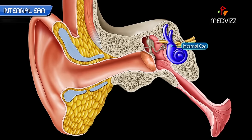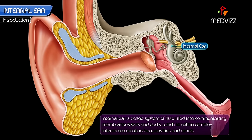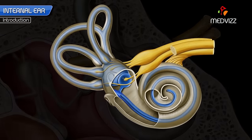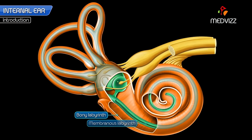The internal ear is situated in the petrous part of the temporal bone, deep to the tympanic cavity. It is a closed system of fluid-filled intercommunicating membranous sacs and ducts which lie within complex intercommunicating bony cavities and canals. It consists of two parts: an outer bony labyrinth and an inner membranous labyrinth.